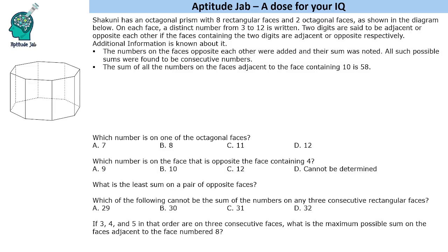Hello everyone, welcome to Aptitude Jab. This set says that Shakuni has an octagonal prism with 8 rectangular faces and 2 octagonal faces. The top and the bottom are octagons and the sides are rectangles — so 8 rectangles and 2 octagons.